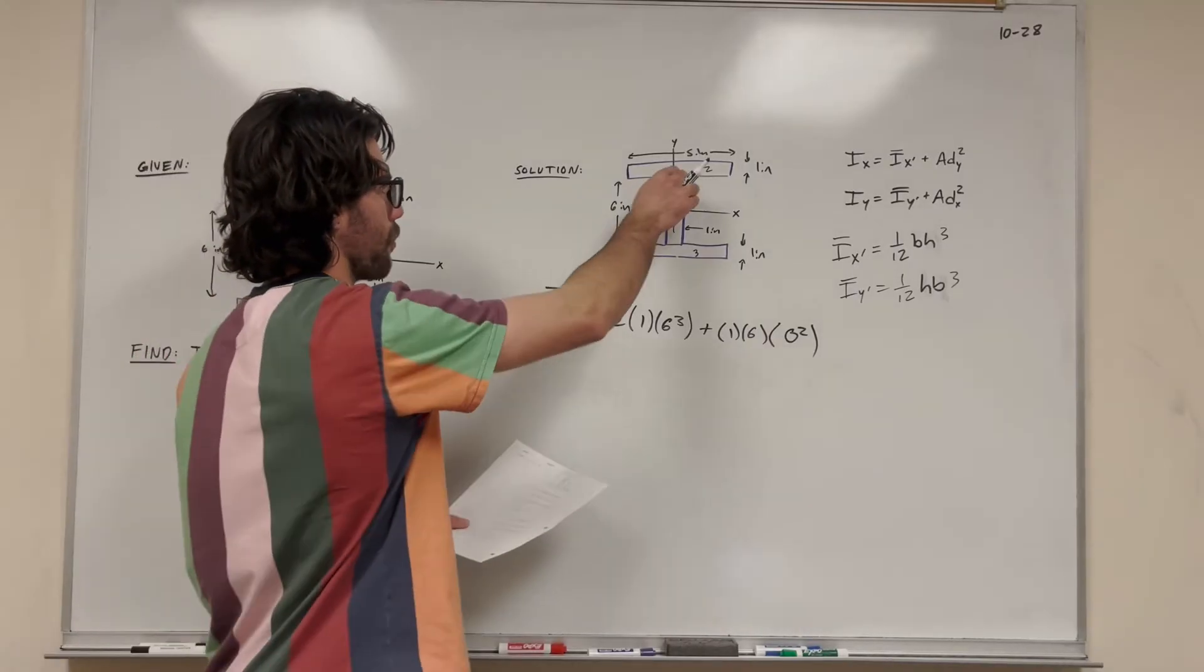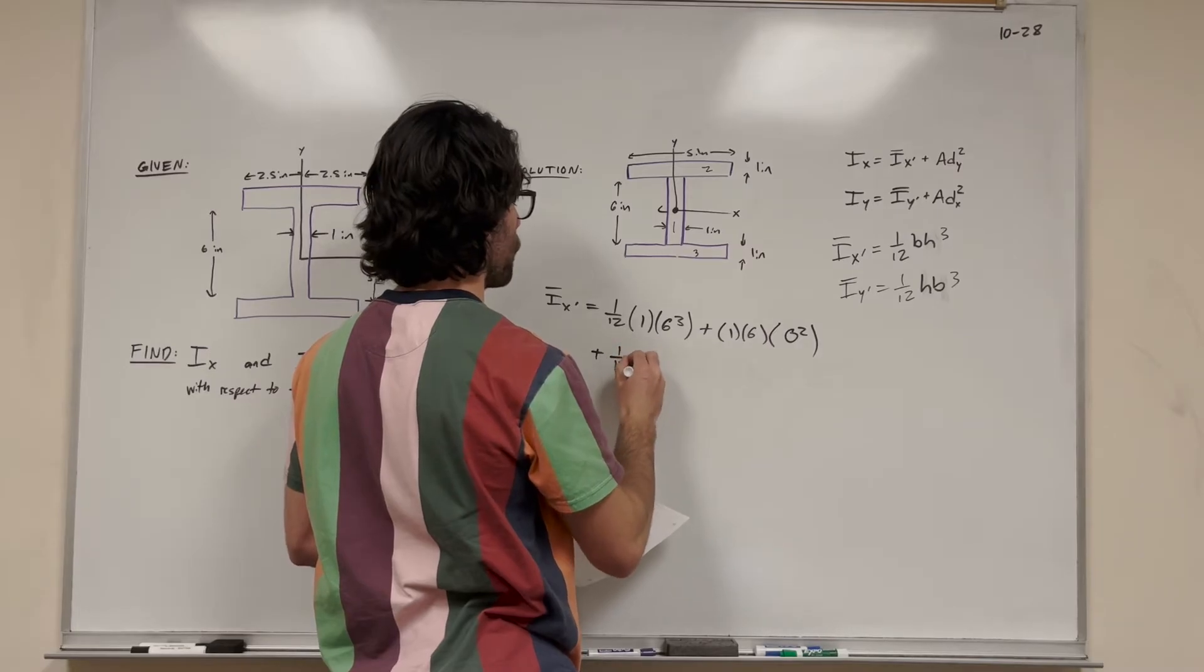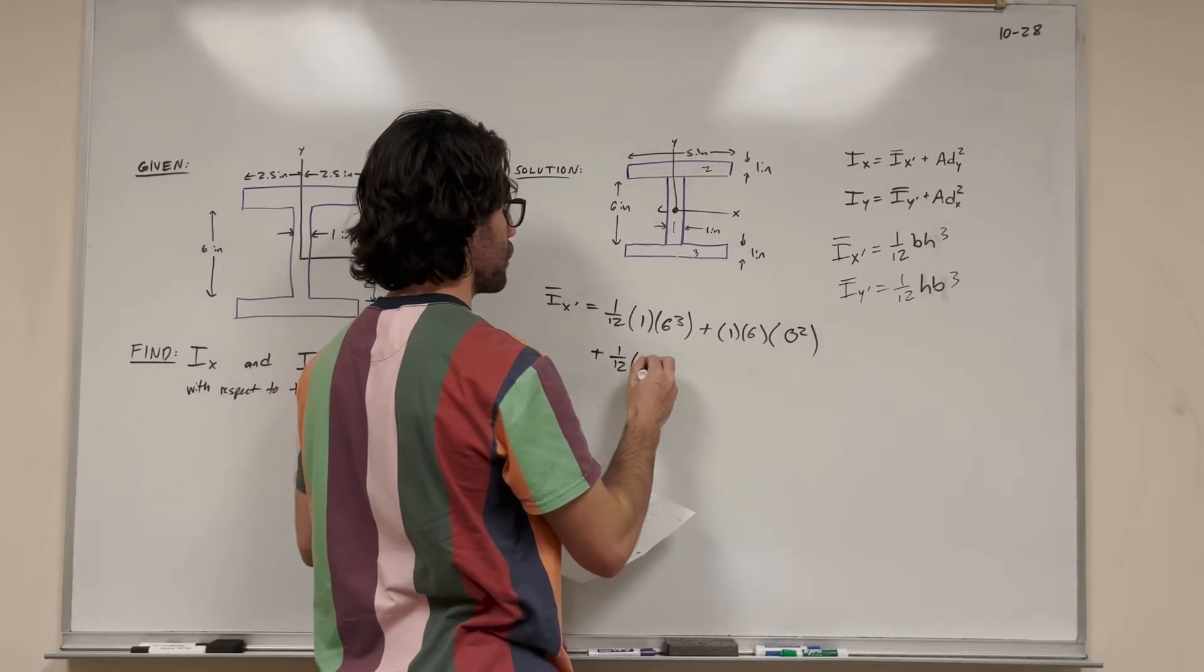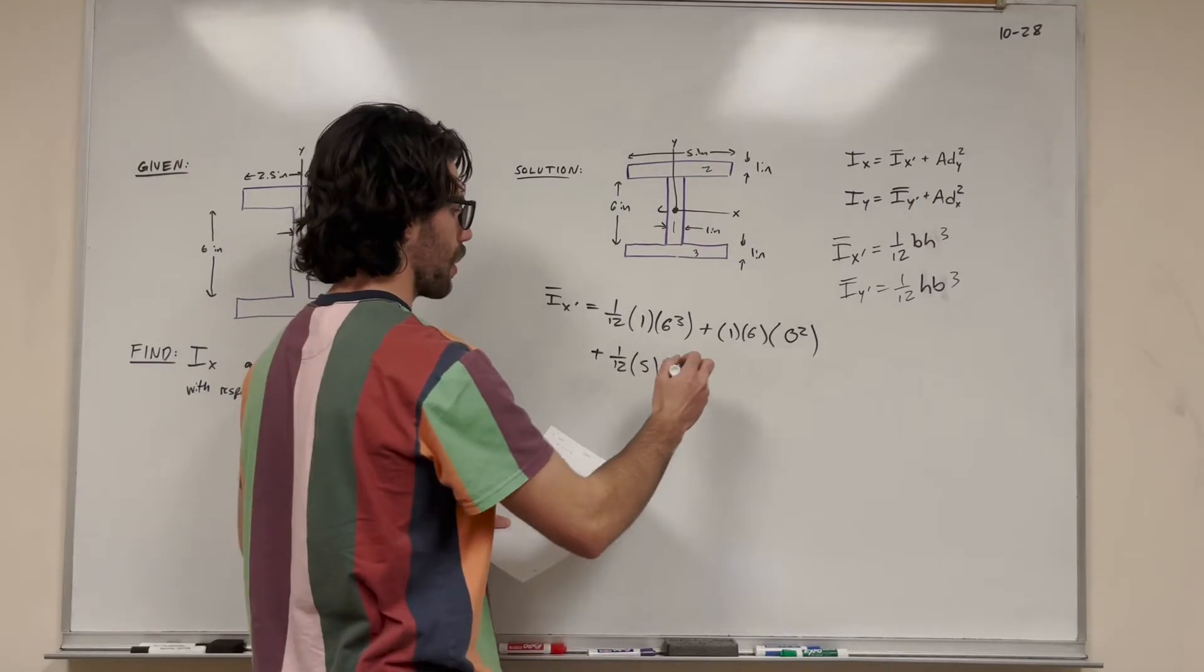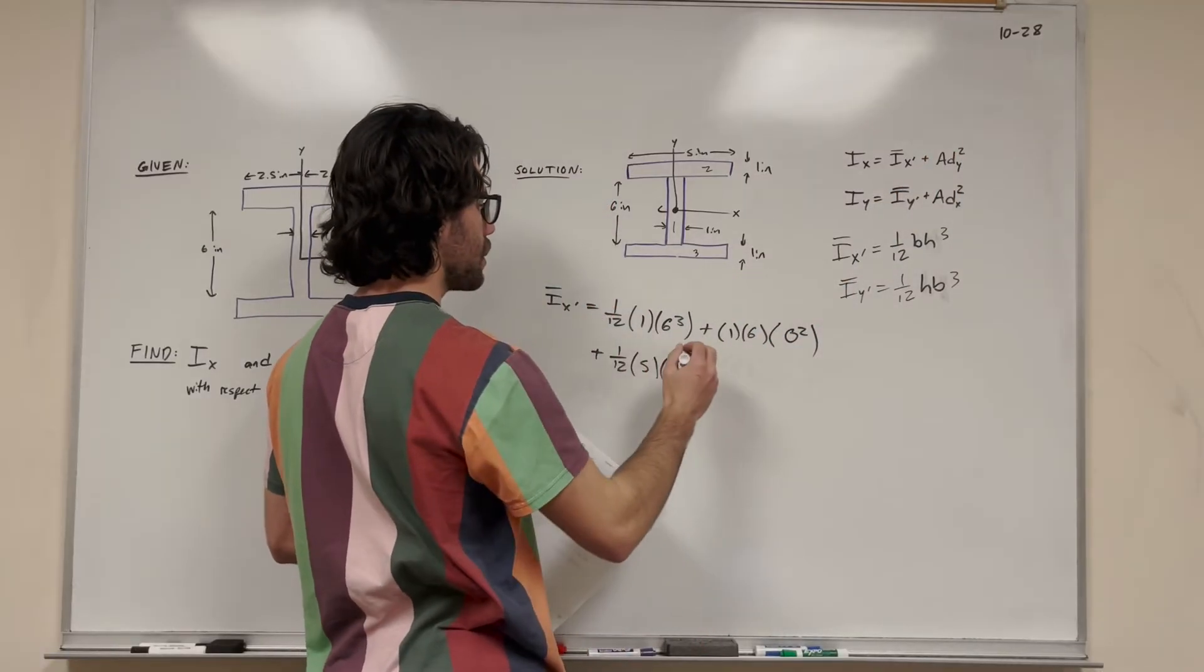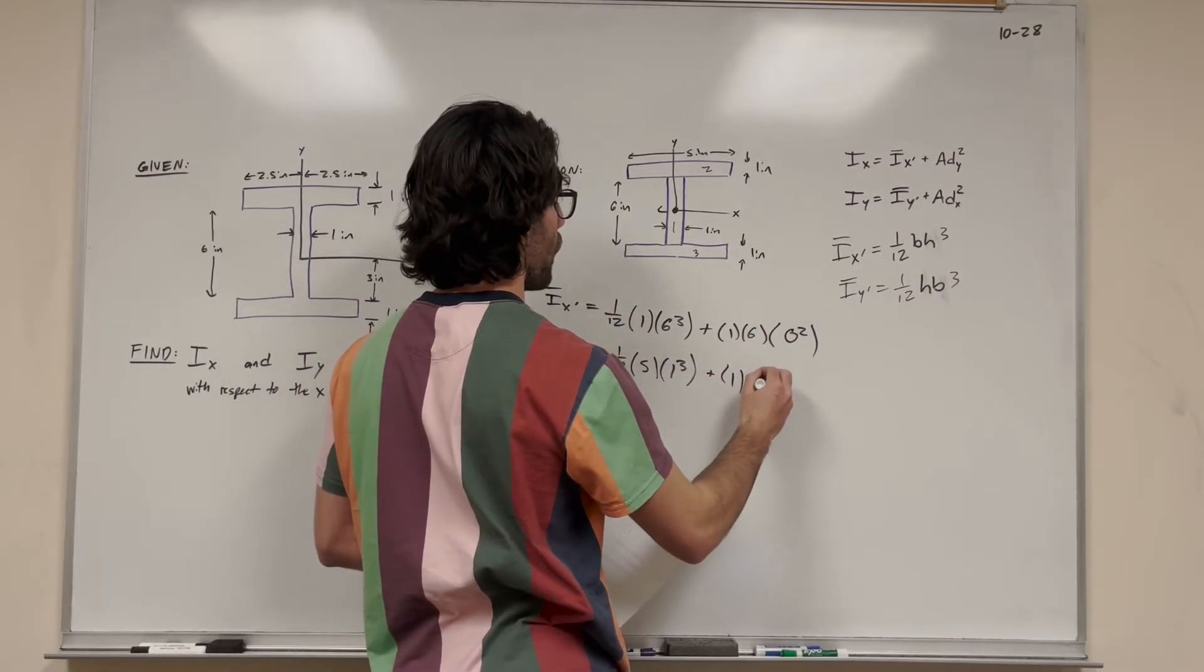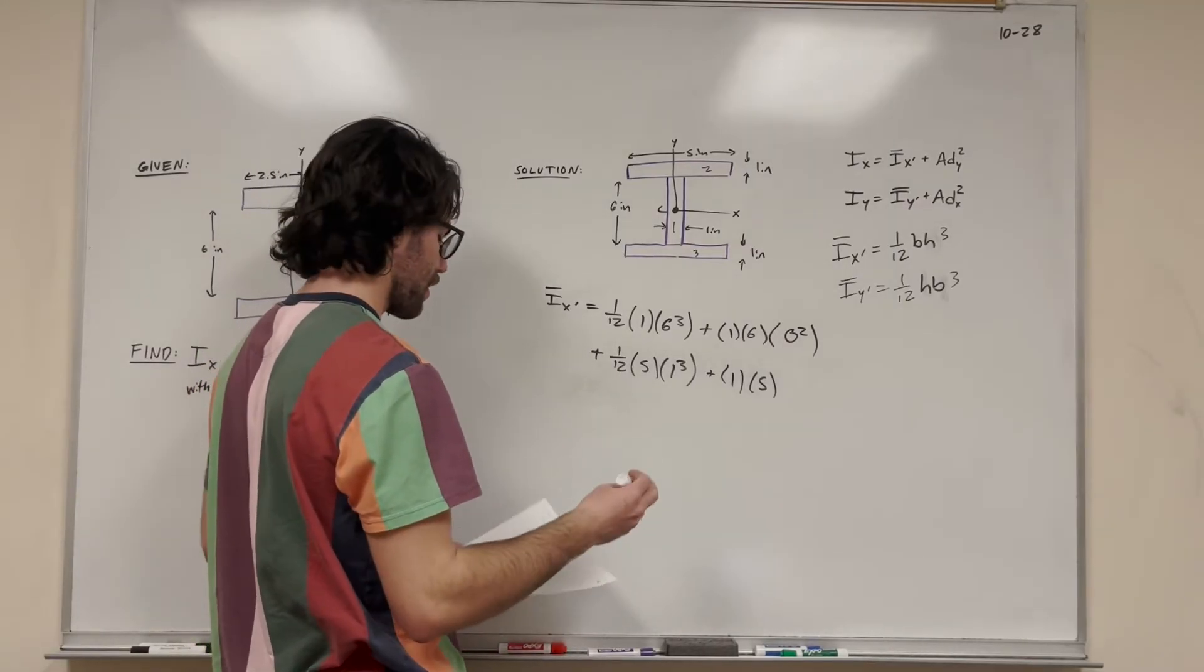Let's go to the next shape now - shape 2, which is up there. We're going to do 1/12 base height cubed - 5 inches times 1 inch cubed. Then we add it to the area distance y. Its area is 1 times 5, so 5 square inches. And distance y - well, now it's going to actually be different.